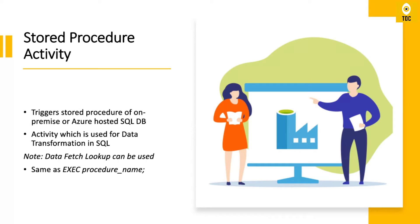There are two things you can do with a stored procedure in SQL: you can create some transformations, or write a select statement with joins or filters and get data. But here, the intention of calling the stored procedure is to do data transformation — like inserts or updates that act on the data. That's when we use the Stored Procedure activity in Data Factory.